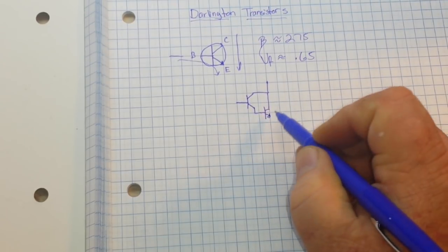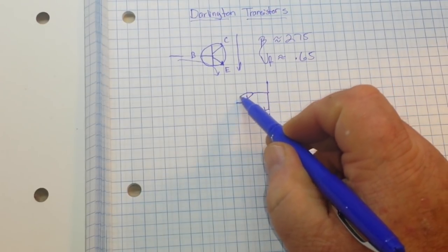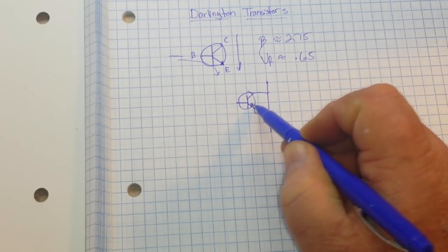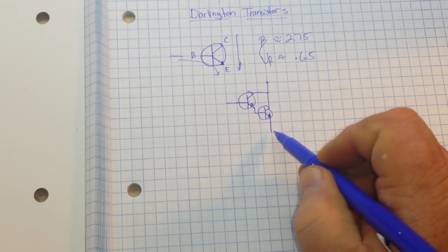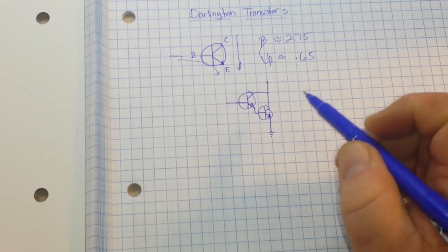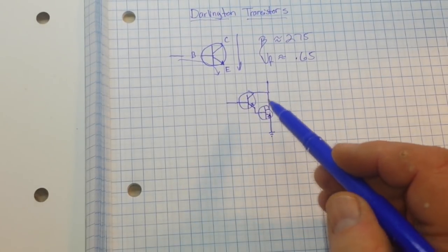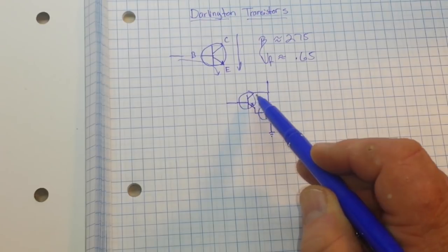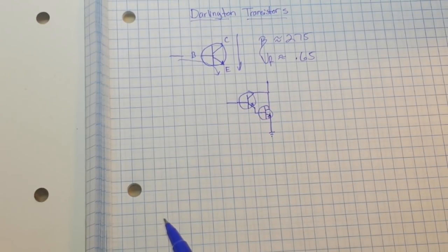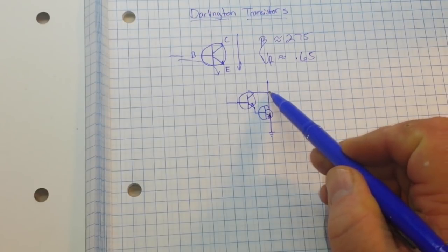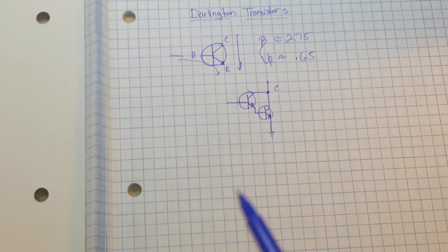So our Darlington transistor is a pair of transistors where the gain of the first transistor is further amplified by the gain of the second transistor. And right here, this collector junction is called the common collector junction, so they share the collector voltage.